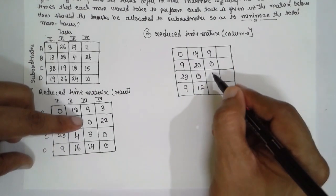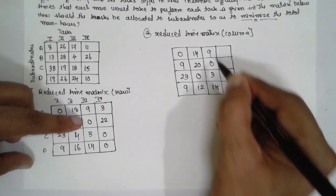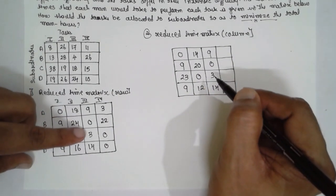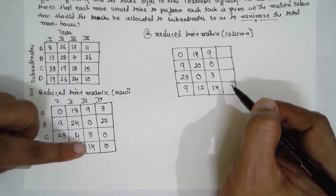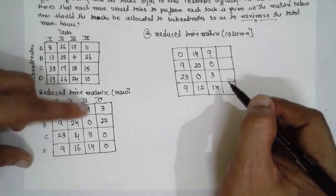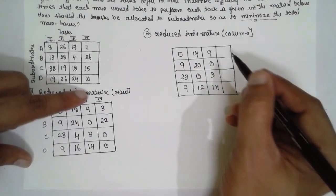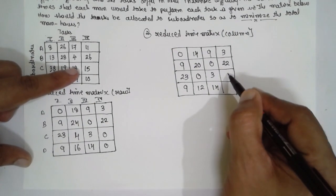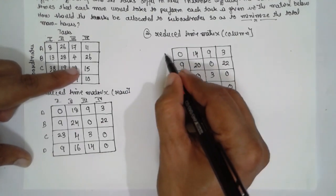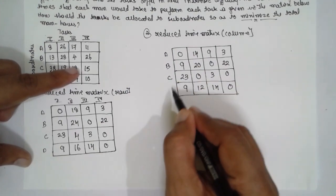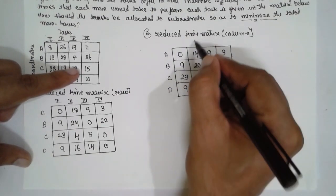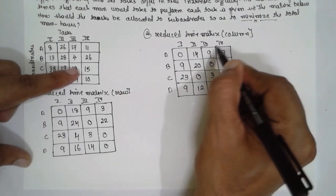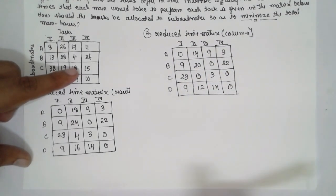For the third column, the smallest is 0, so write it as it is: 9, 0, 0, 3. For the fourth column, the smallest is again 0, so write that column as it is. The resulting reduced matrix has rows A, B, C, D and columns 1, 2, 3, 4. After row-wise reduction and column-wise reduction, the matrix is ready for the next step.